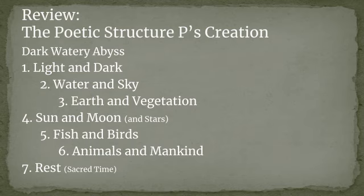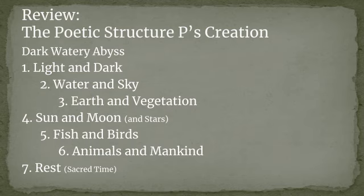Let's talk about the poetic structure of P's creation as a reminder of what we covered before. P's account says that the origin of evil is preexistent — before the creation, there was a dark, watery abyss. God began to create order out of chaos by dividing, organizing, naming, and blessing things. P divides creation into a poetic structure: day one creates light and dark, day four creates the sun and moon that move through them; day two creates water and sky, day five creates fish and birds; day three creates earth and vegetation, day six creates animals and man. He's not telling you the literal order of creation — he's ordering them poetically. That's how P sees goodness: goodness is created when you organize and order things.